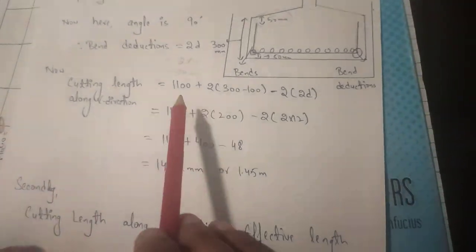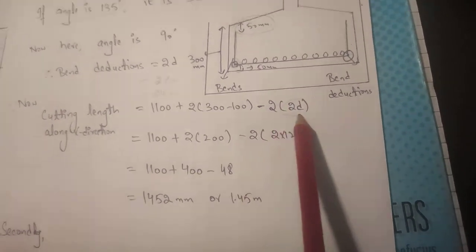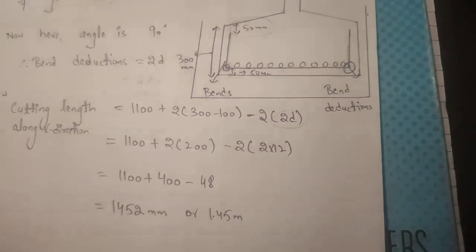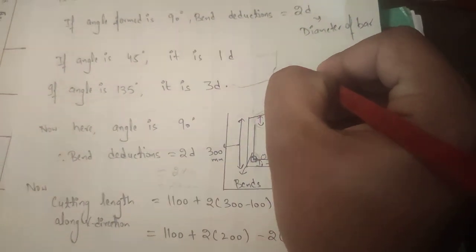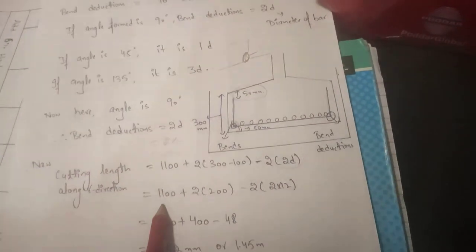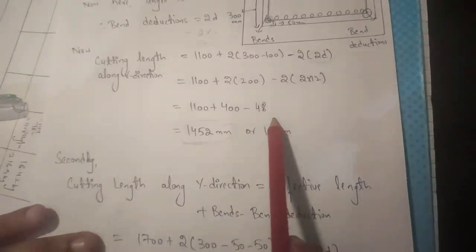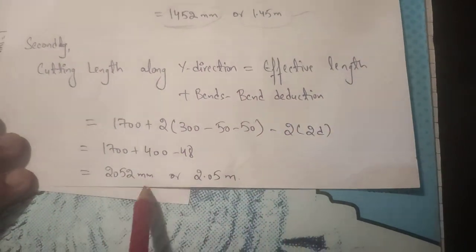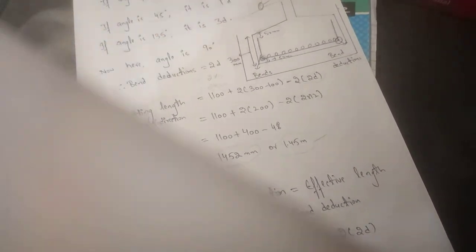Cutting length along X direction = 1100 + 2 into 200 minus 2 into 24 = 1452 mm, approximately 1.45 meters. Similarly, cutting length along the Y direction = 2052 mm, approximately 2.05 meters.